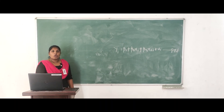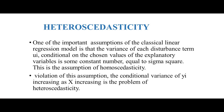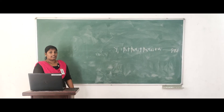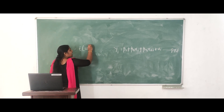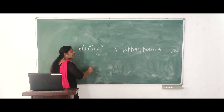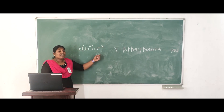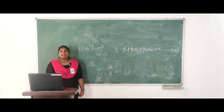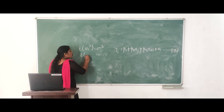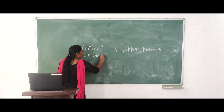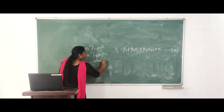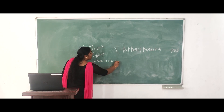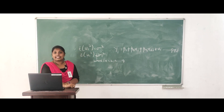The next important limitation is heteroscedasticity. An important assumption of the classical linear regression model is that the variance of the disturbance term ui is constant, also known as sigma squared — that is, E(ui²) = σ². This is the assumption of homoscedasticity. The violation of this assumption is known as heteroscedasticity, which means E(ui²) = σi², where i = 1, 2, 3, ..., n. This is the problem of heteroscedasticity.